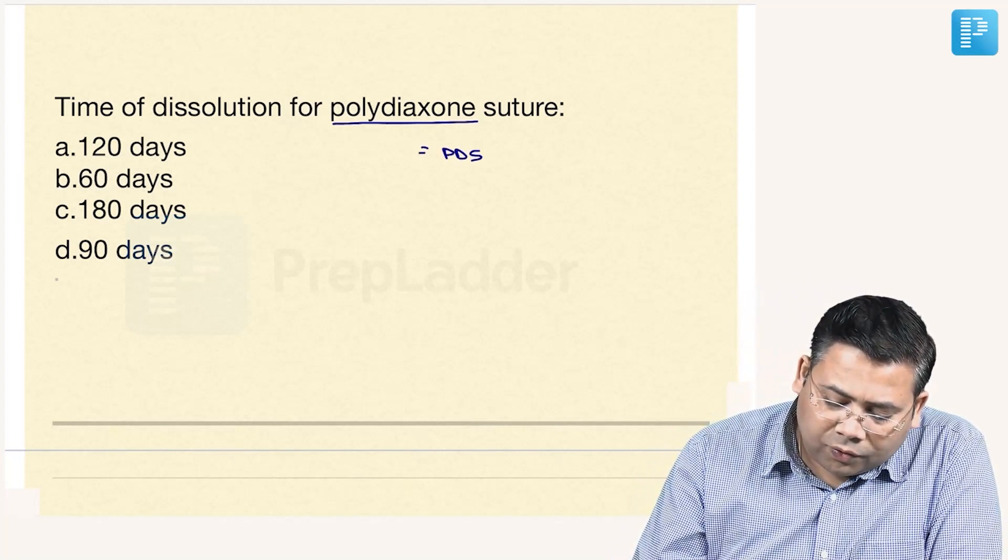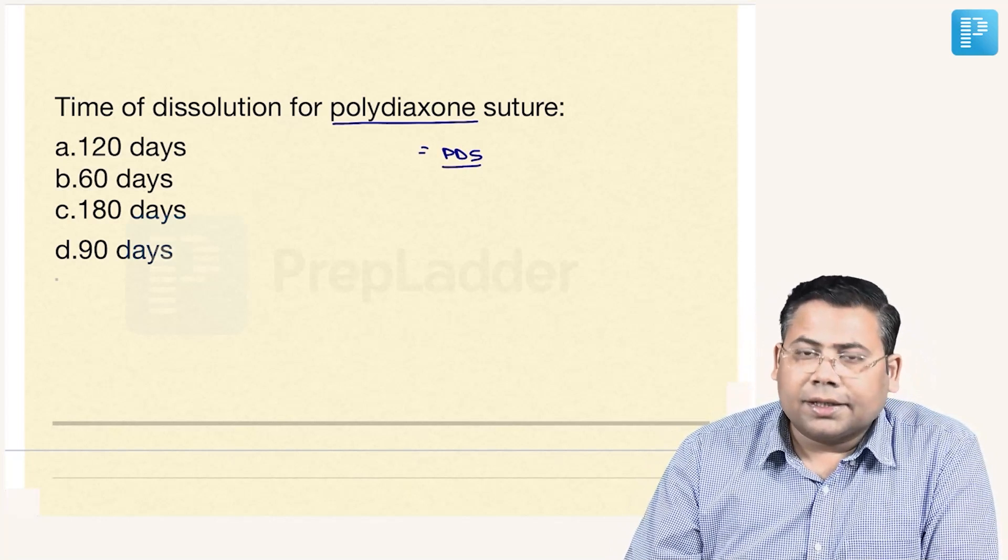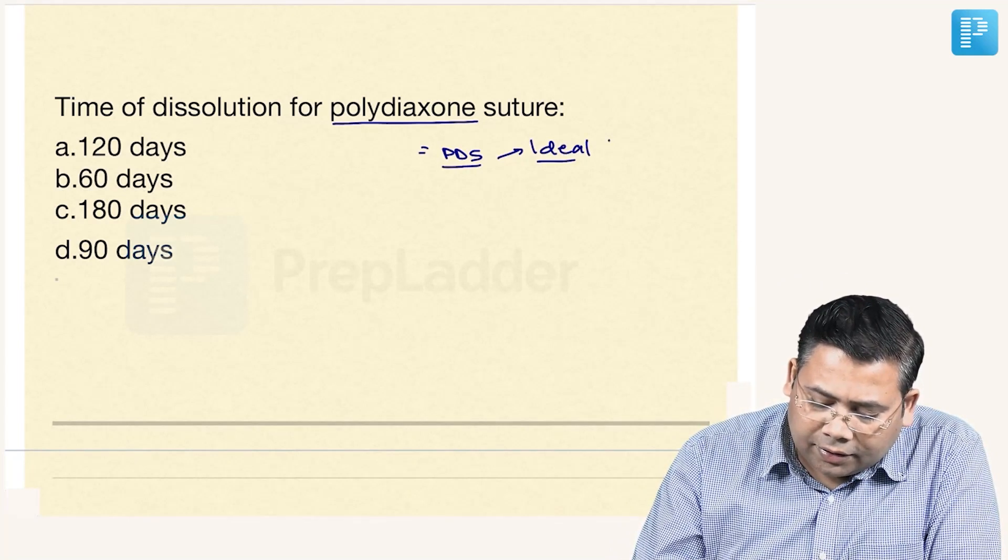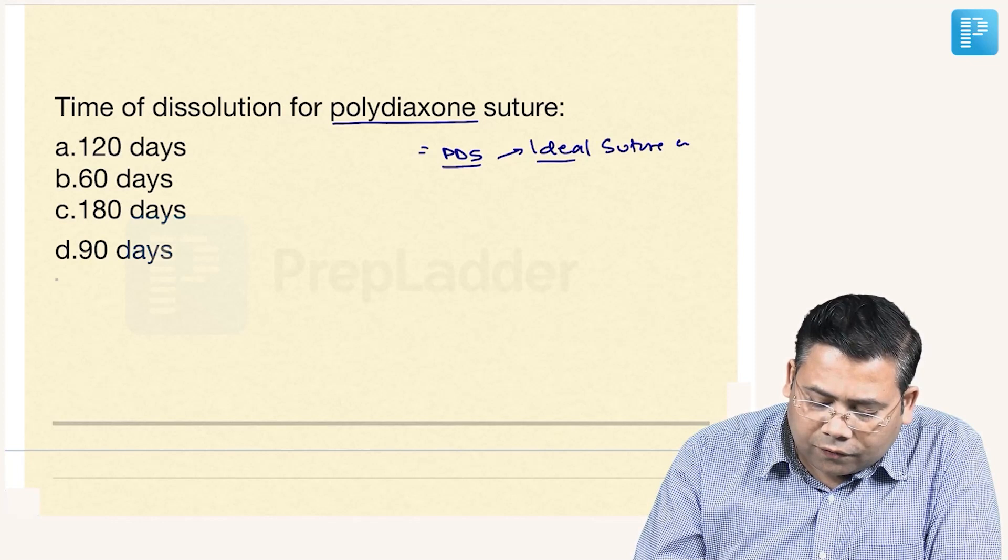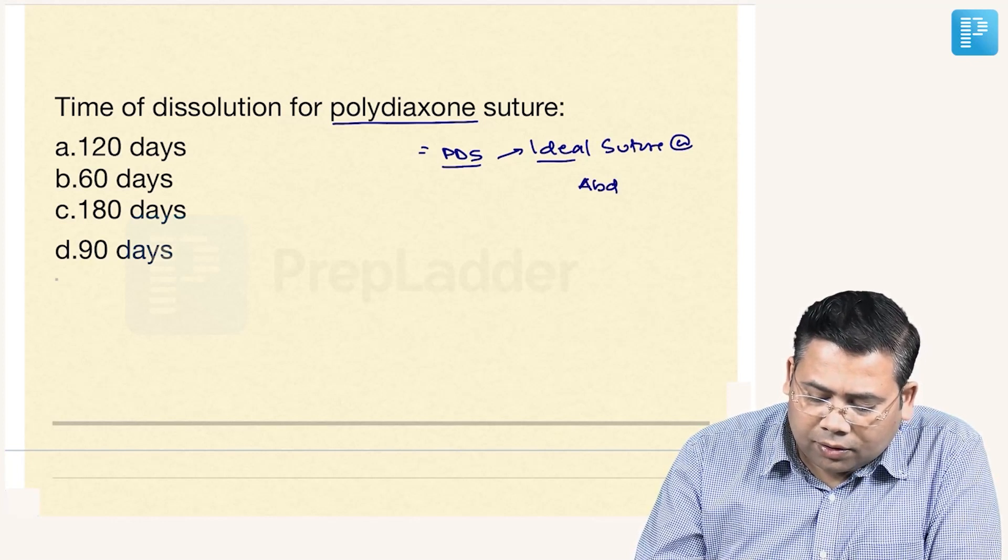Polydioxone, which we commonly know as PDS. Yes, this is an ideal suture. This is an ideal suture for abdominal closure.